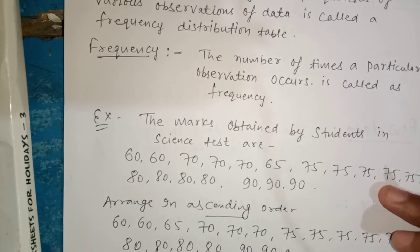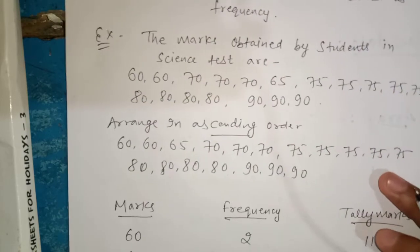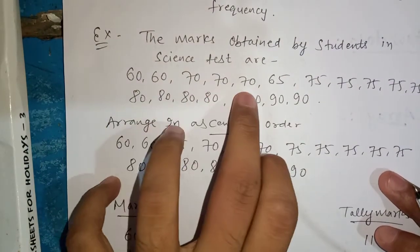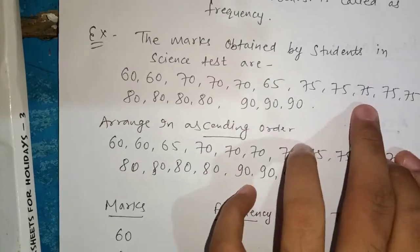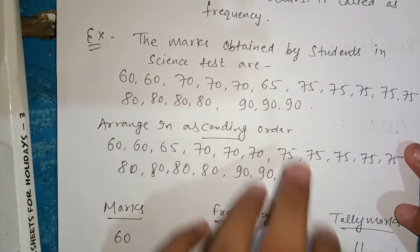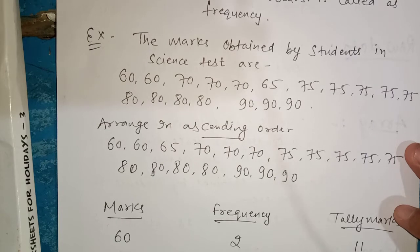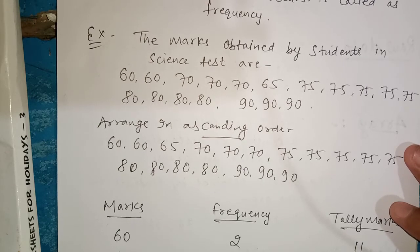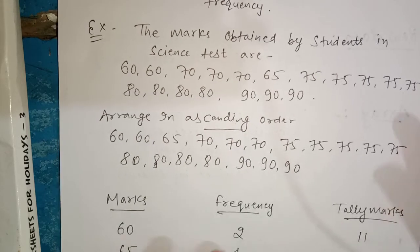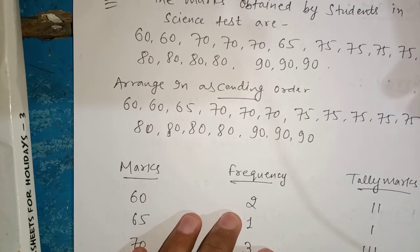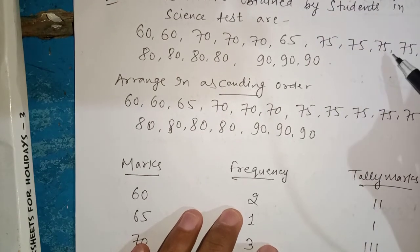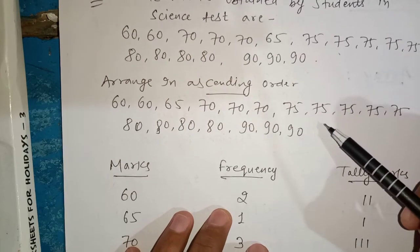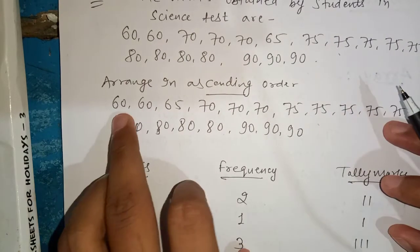That means, in a particular data, how many times does that observation appear? For example, with marks data like 60, 60, 70, 70, 65, 75, 75, 75, 80, 80, 80, 90, 90 — the same number repeating is counted as frequency. We have marks obtained in a science test. This is our raw data, and we arrange it in the array in increasing order. In the frequency table we make a marks column and a frequency column.